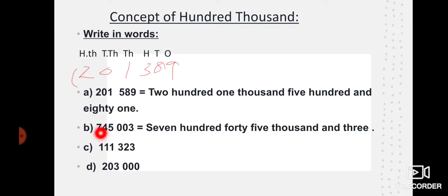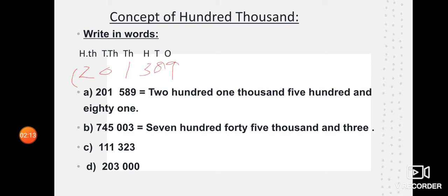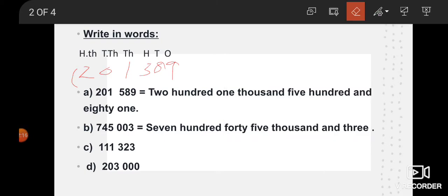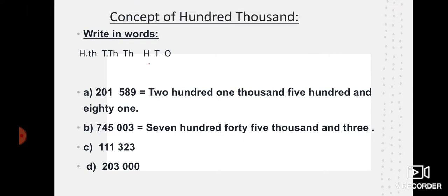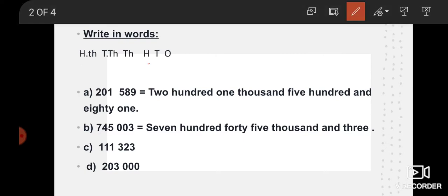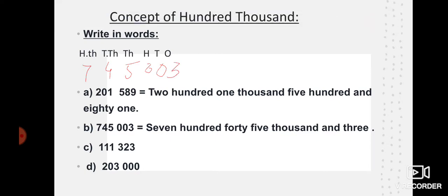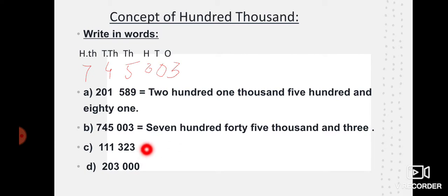Clear. After that we have seven, four, five, zero, zero, three. Again we will put this value below the place value table. So students, look at this: seven, four, five, zero, zero, three. Seven hundred — seven hundred forty-five — forty-five means forty-five thousand — and three. Okay: seven hundred forty-five thousand and three.